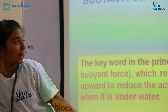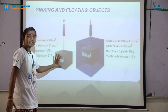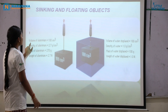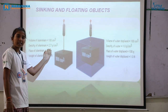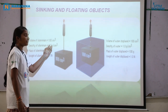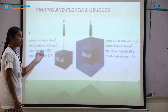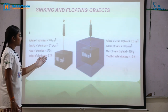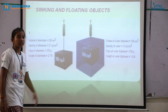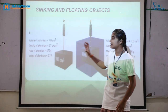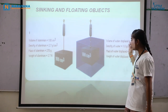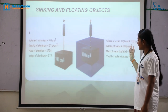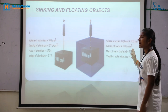Here is one more example. This is a block of aluminium. The volume of the aluminium is 100 centimetre cube and the density of the aluminium is 2.7 grams per centimetre cube. When this aluminium is placed in a liquid, its volume is 100 centimetre cube and the density of the liquid is 1 gram per centimetre cube. Mass is 100 grams.